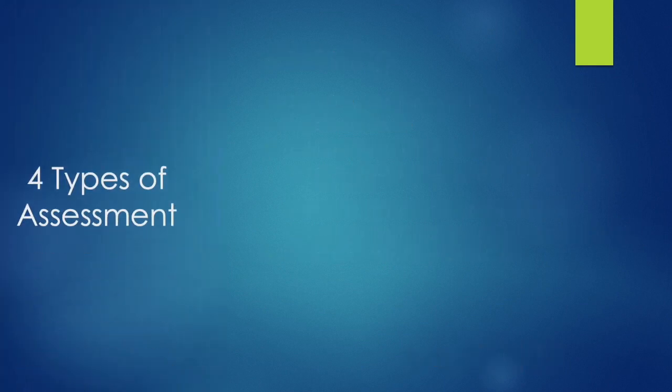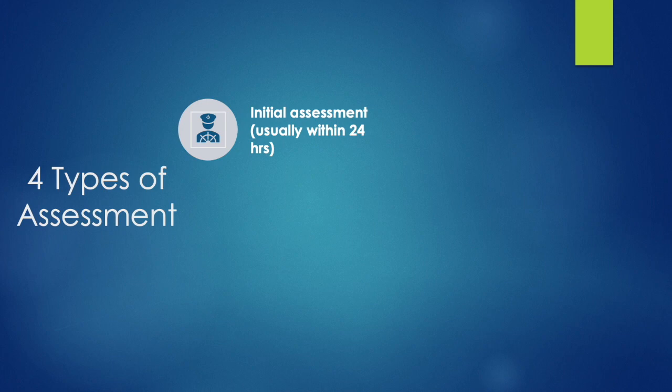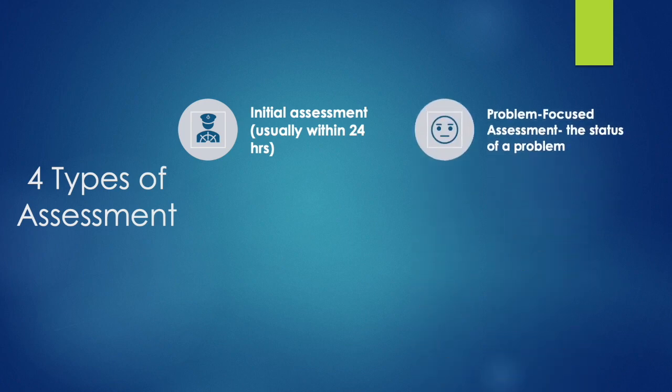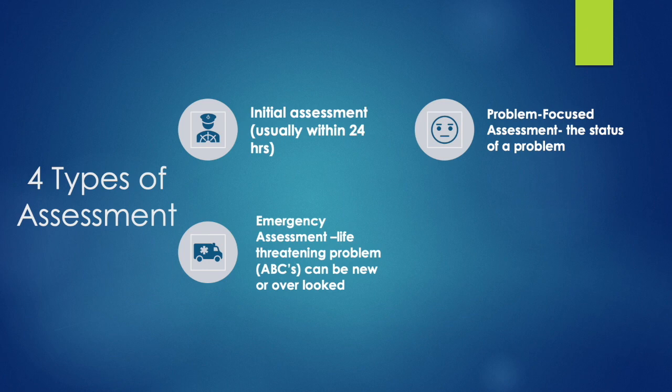There are four types of assessment. The first is the initial assessment, usually done within 24 hours of admission to form a database of information about your patient. Next is the problem focus assessment, which focuses on the patient's problem — if the patient comes in with a broken leg, you'll just assess the leg. Next is the emergency assessment, which assesses a life-threatening problem involving the airway, breathing, or circulation — the ABCs — and these can be new or overlooked problems.